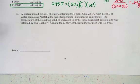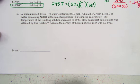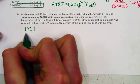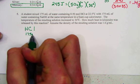Our last question of Objective 1 reads, a student mixed 175 mLs of water containing 0.50 moles of HCl at a 22.5 degree initial temperature. I'm going to just make note that one of our reactants is HCl, and we are measuring out 175 mLs.